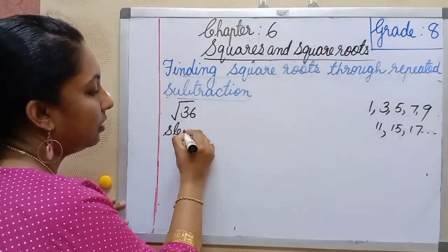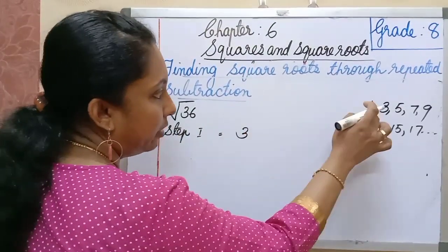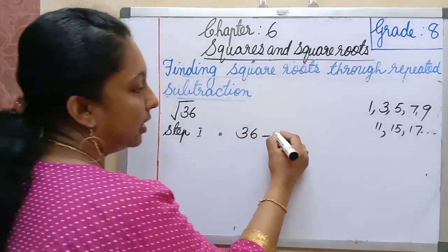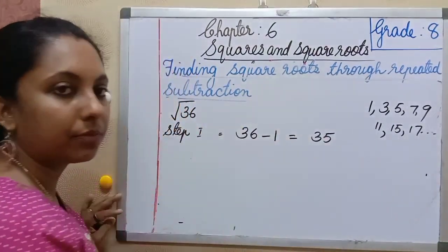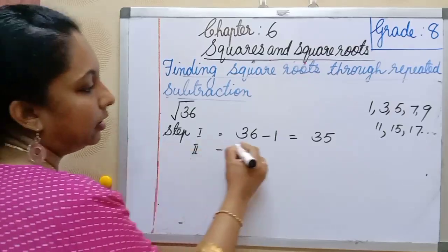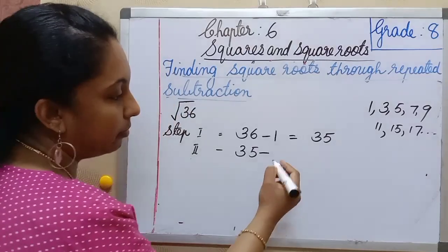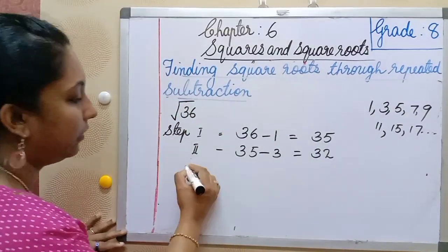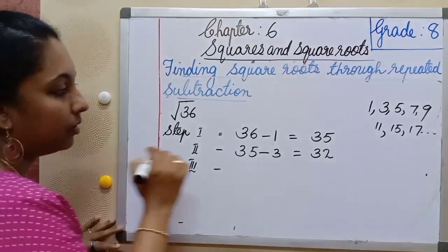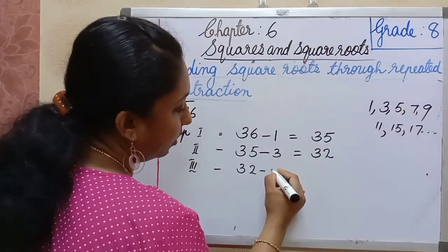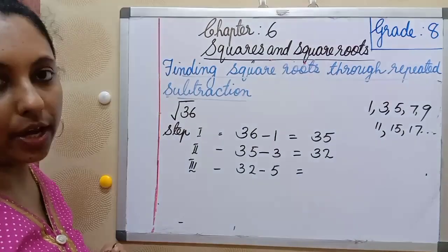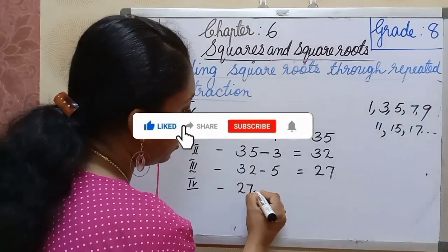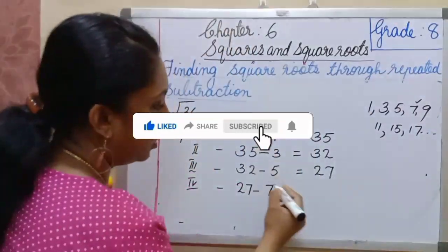Step 1: subtract the first odd number from 36. That is 36 − 1 = 35. Step 2: 35 minus the second odd number, which is 3. That gives 32. Step 3: 32 minus the third odd number, 5. That is 27. Step 4: 27 minus the fourth odd number, 7. That gives 20.